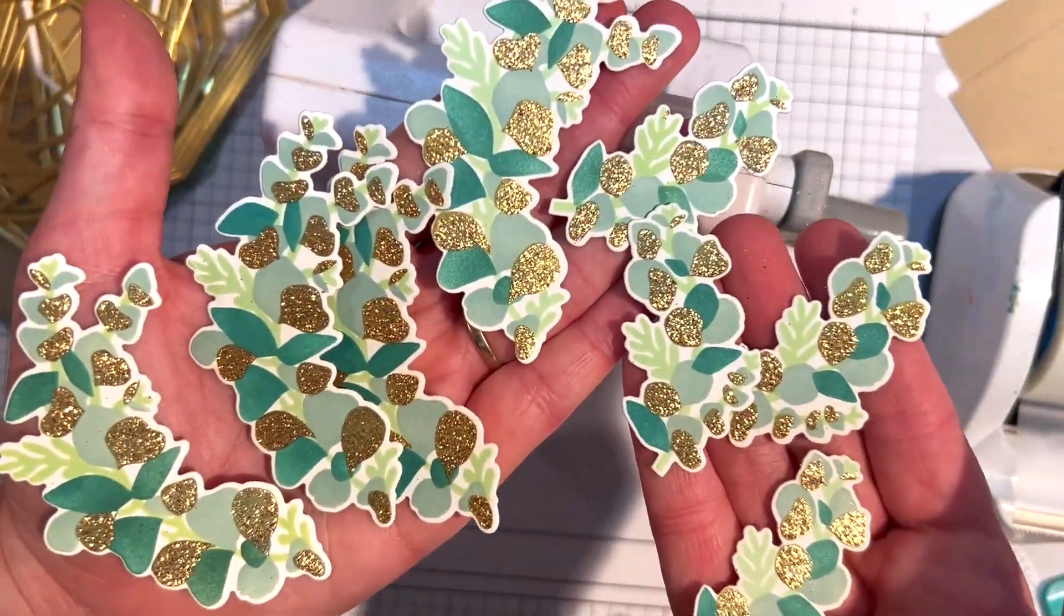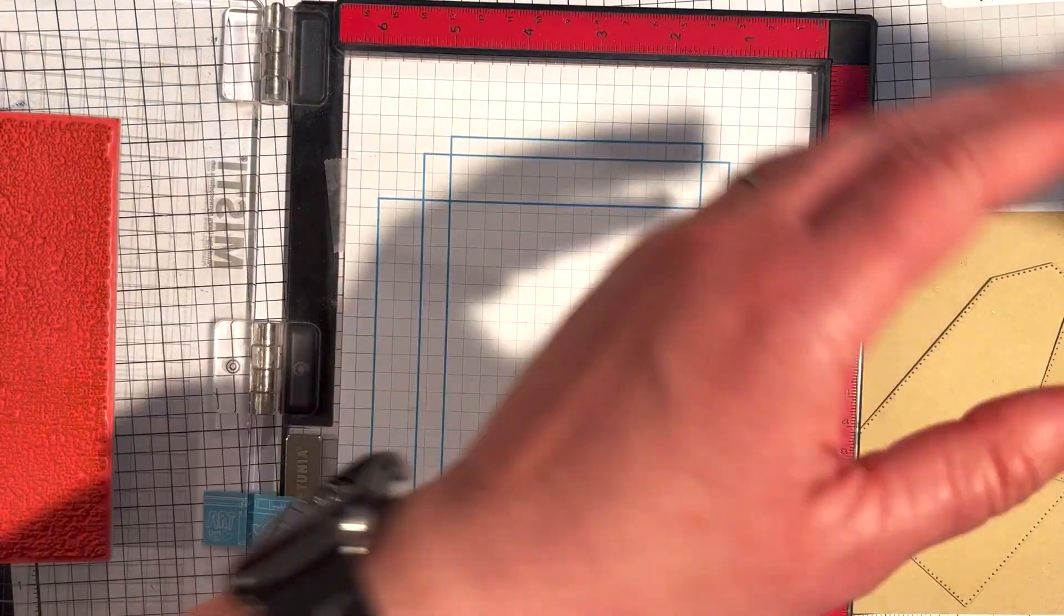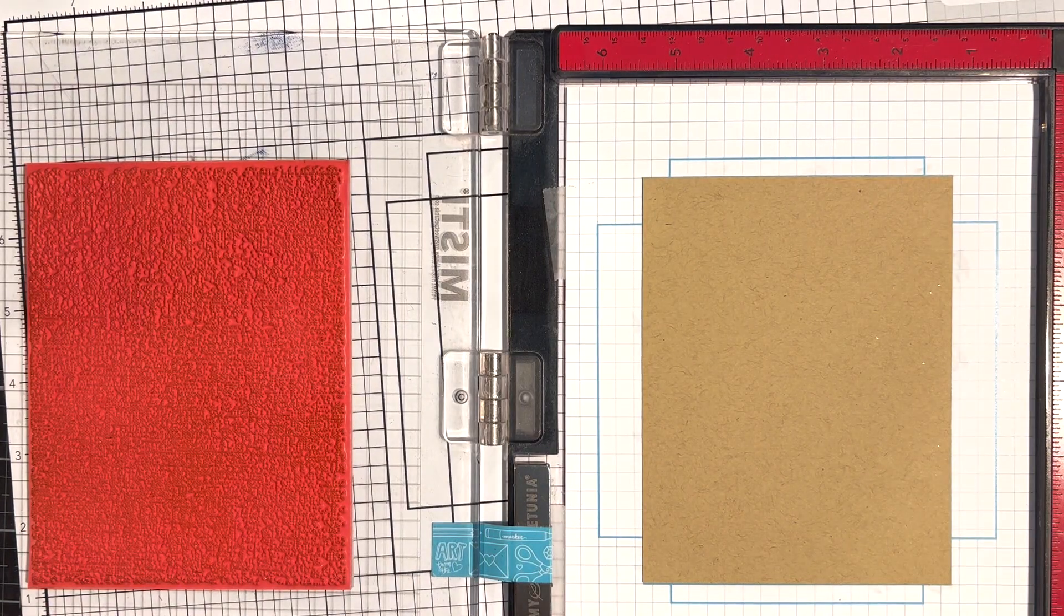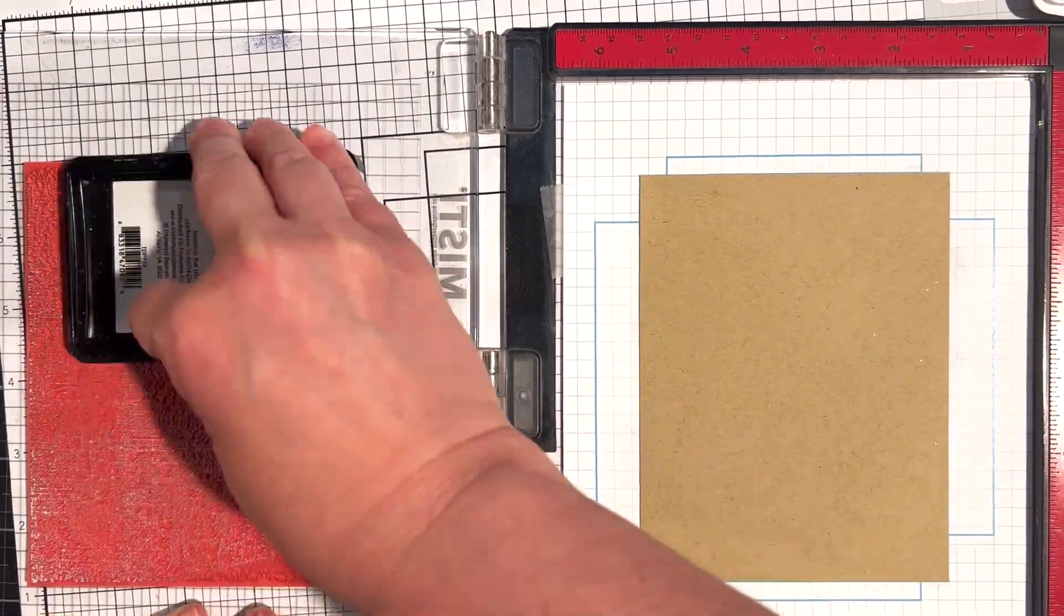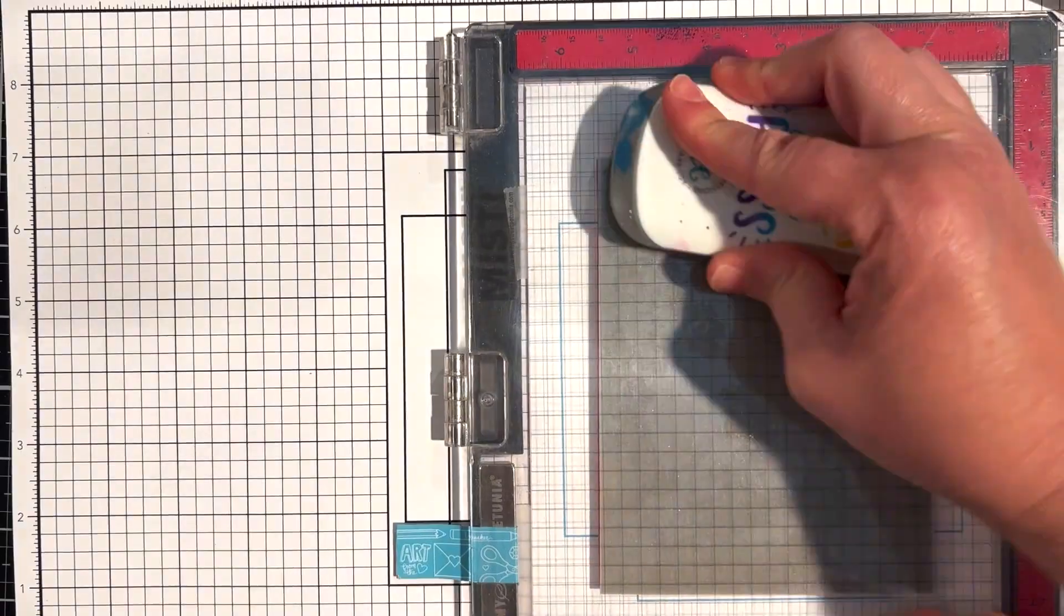I wanted to add a little extra texture to my card background and my tags, so I stamped the linen background stamp using sugar cube ink, both on a panel of toffee cardstock that I'll use on the cards and onto the toffee tags that I cut out with the pierced tag stacklets 2 die collection.